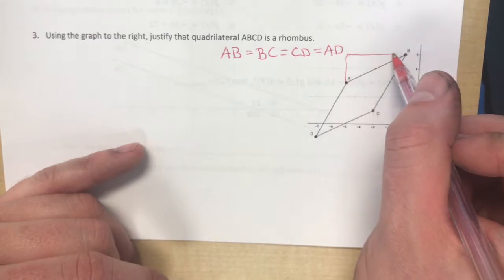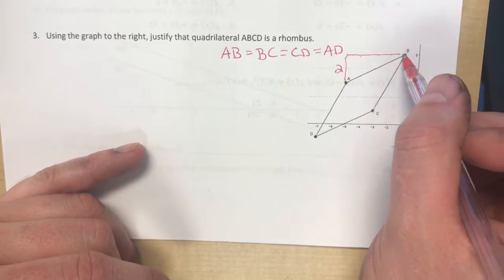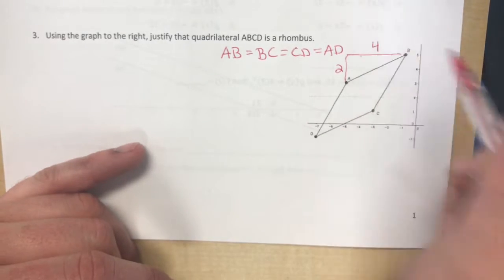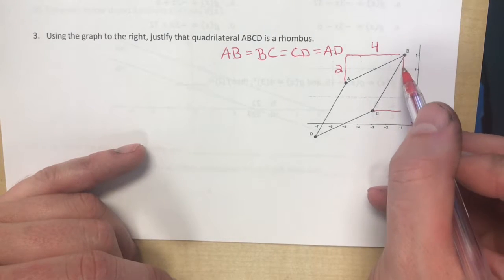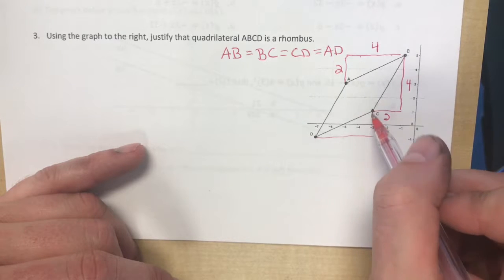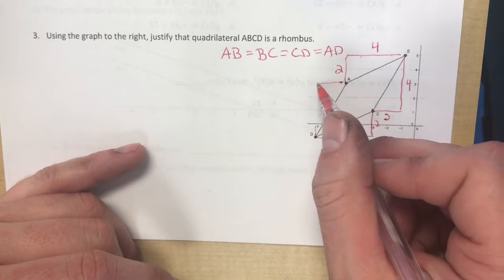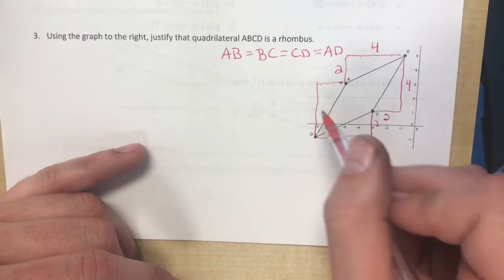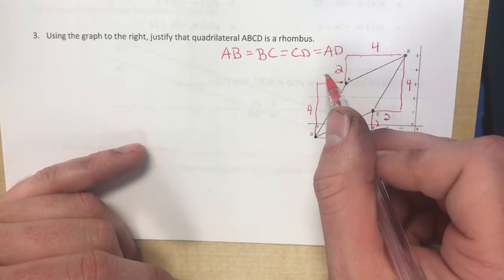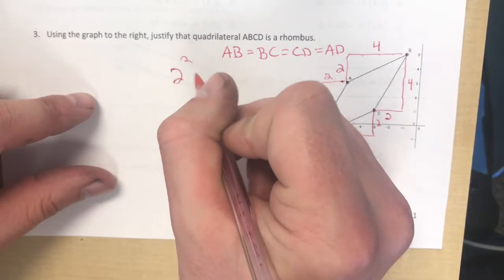So AB is 2, 1, 2, 3, 4, a 2 by 4. This is a 2 by 4. This is a 2 by 4. And this is a 2 by 4. So I could have you guys go 2 squared plus 4 squared equals c squared four different times, but that right there shows me that you know what you're talking about and that you only need to figure it out once.